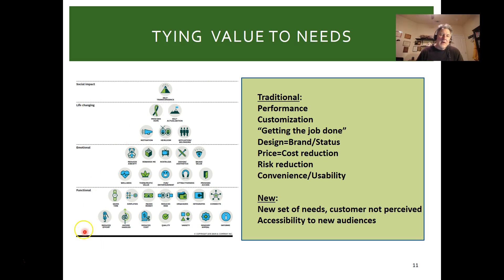Tie your value to needs. We've talked about the Bain Triangle, which is Maslow's Hierarchy of Needs. Understand those needs — functional in terms of performance, maybe customization, getting the job done, maybe design, price, risk reduction, convenience. Those are more traditional types of needs, but there may be new sets of needs the customer has not yet perceived.